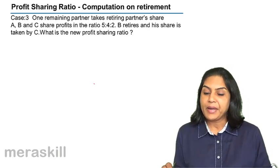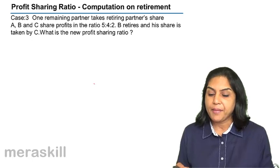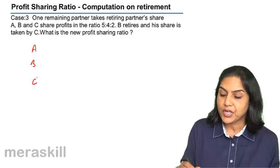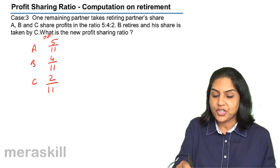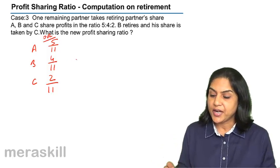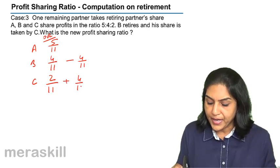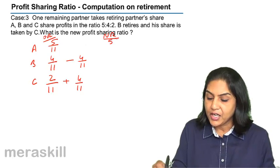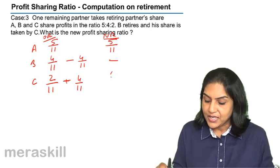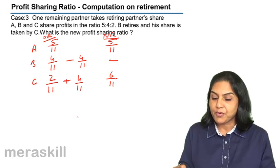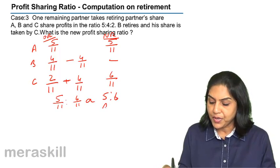Case 3: When one remaining partner takes the retiring partner's entire share. A, B and C share profits in the ratio 5:4:2, so the old ratio is 5/11, 4/11 and 2/11. B retires and his share is entirely taken over by C. So C gains 4/11. A continues at 5/11, and C's new share is 2/11 + 4/11 = 6/11. The new profit sharing ratio between A and C is 5:6.